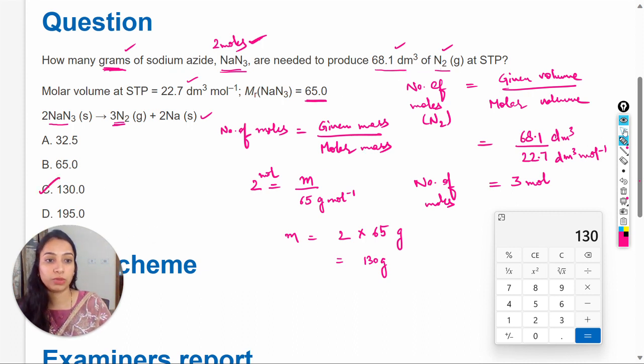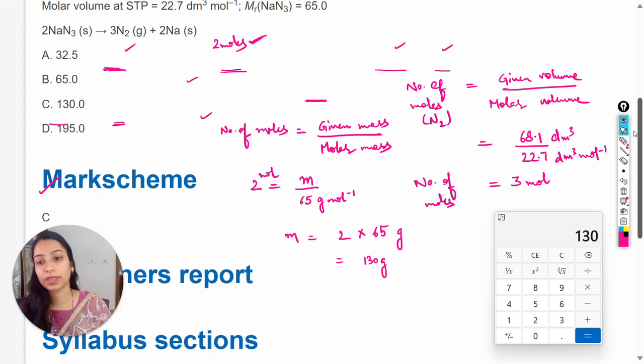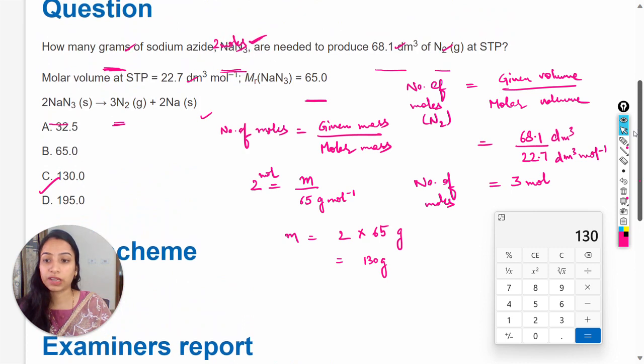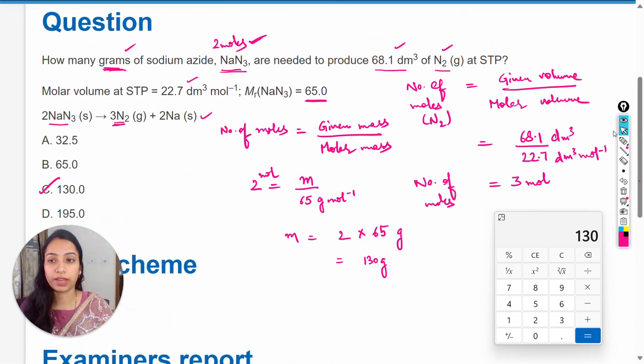65 multiplied by 2 equals 130. So 130 grams of sodium azide will produce this volume of N2 gas. The answer is option C. Let's check the mark scheme—yes, it confirms option C is correct.